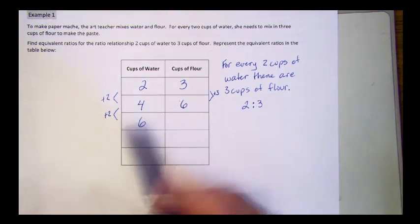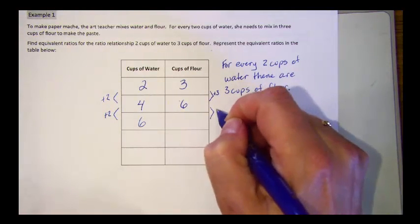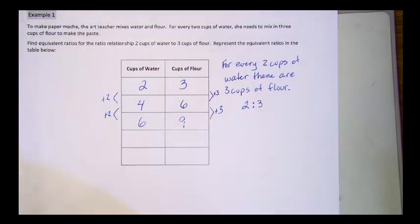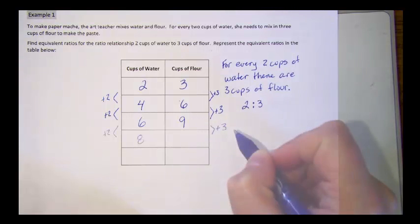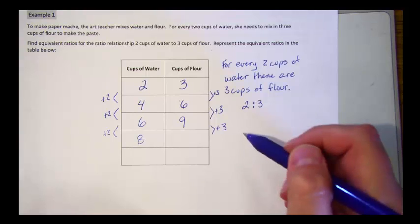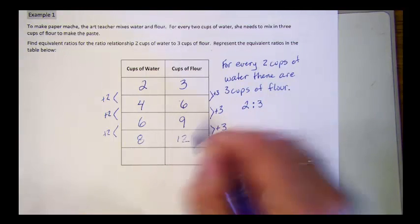And if I add two cups of water, I need to add another three cups of flour. I have another equivalent ratio, six to nine. I can keep going, adding two cups of water every time and three cups of flour until I have my table filled out.